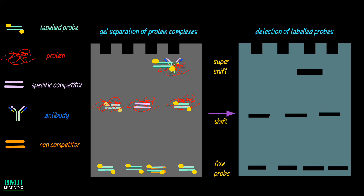Once the gel is visualized, the difference in band location indicates whether the protein of interest has bound to the potential target DNA.